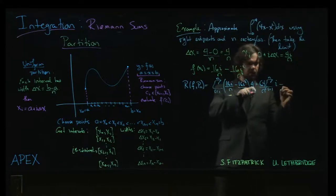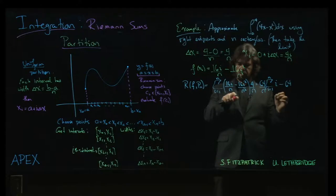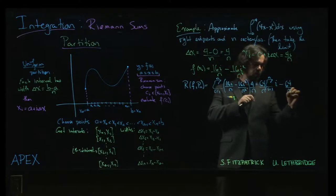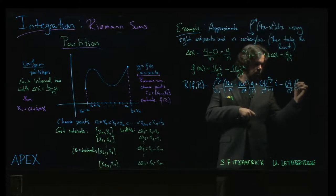And then minus 16 times 4, another 64, n squared times n, n cubed, well that's a common factor we take out, i equals 1 to n, i squared.